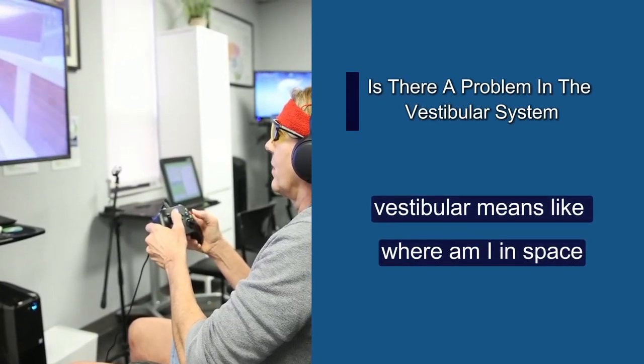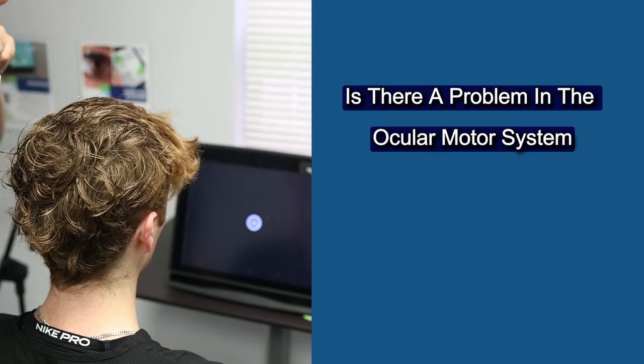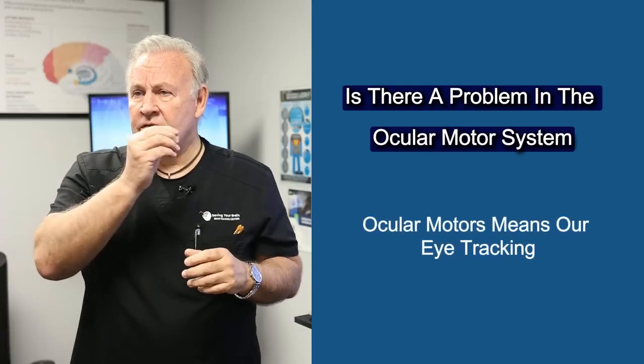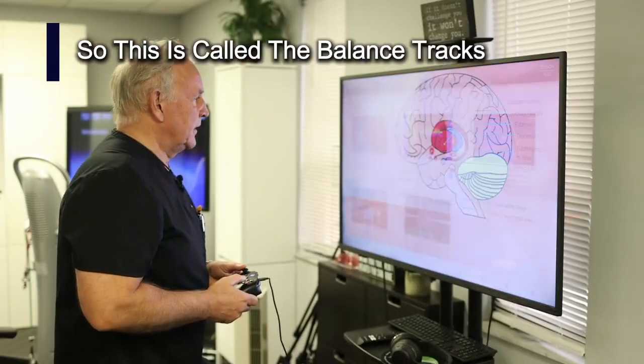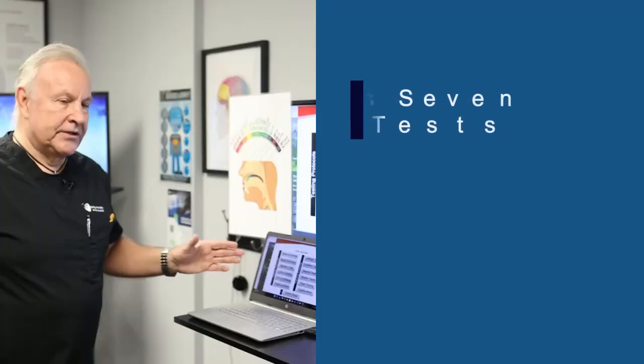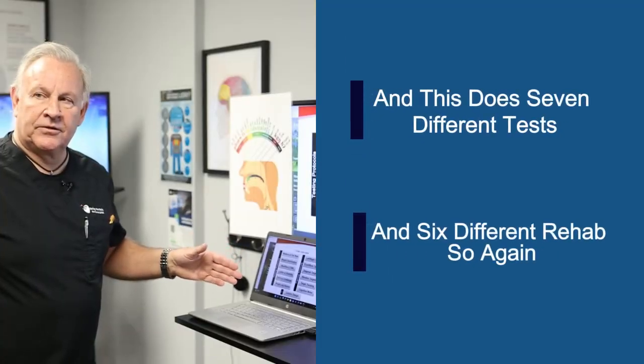Vestibular means like, where am I in space? Is there a problem in the oculomotor system? Oculomotor just means our eye tracking. So this is called the Balance Tracks, and this does seven different tests and six different rehabs.